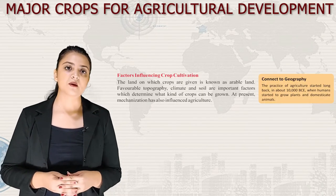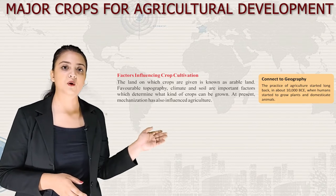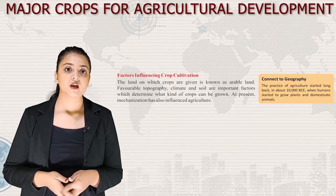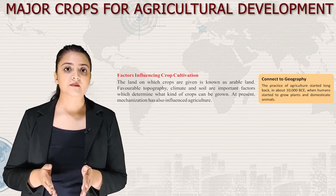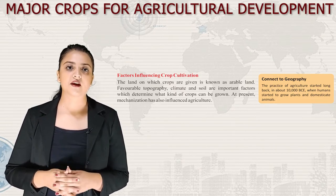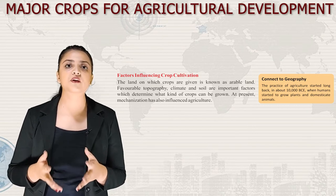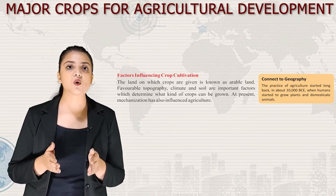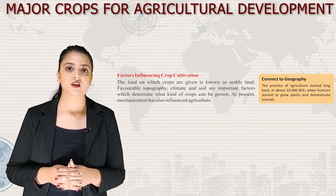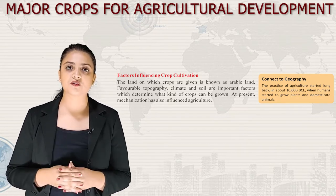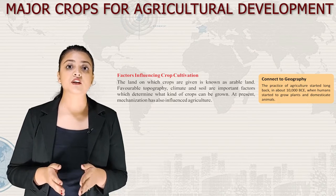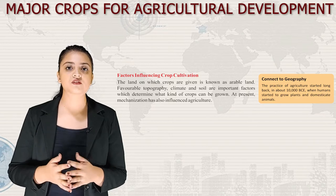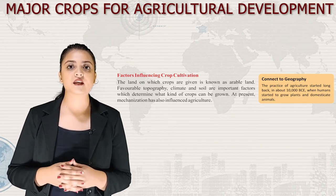Now let's talk about factors influencing crop cultivation. The land on which crops are grown is known as arable land. Favorable topography, climate and soil are important factors which determine what kind of crop can be grown. At present, mechanization has also influenced agriculture. The practice of agriculture started long back, in about 10,000 BCE, when humans started to grow plants and domesticate animals.